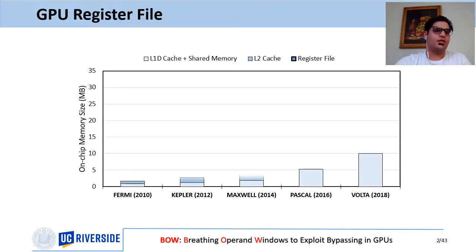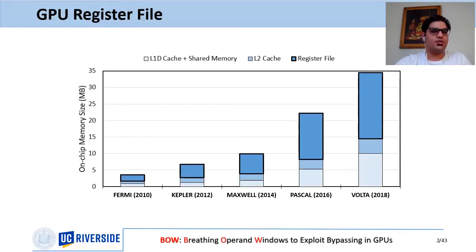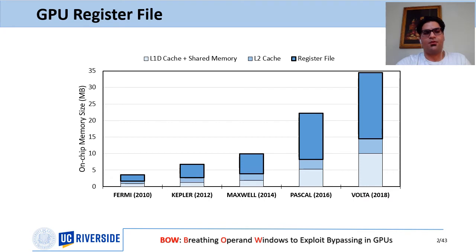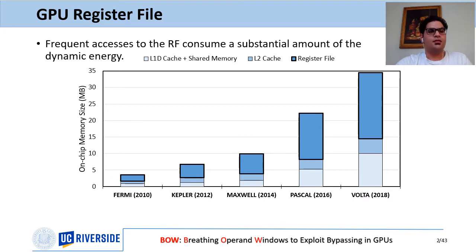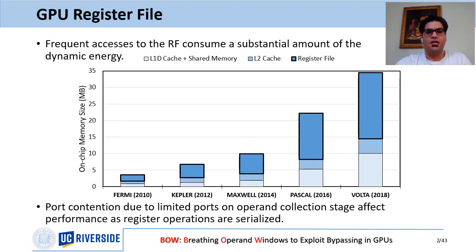With the continual growth of register file size of GPUs, it has become a critical structure. Register file is the fastest and most expensive type of memory. The frequent accesses to the register file consume a substantial amount of dynamic energy, and port contention also affects overall performance.